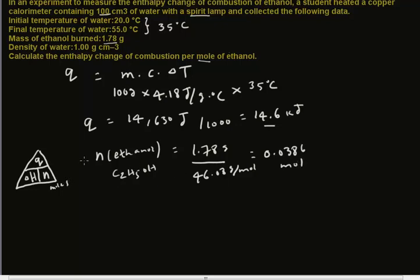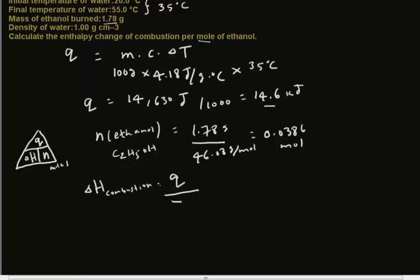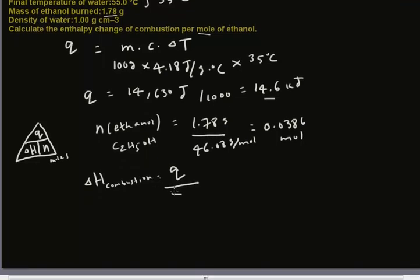So we have the moles of alcohol. We have the heat energy Q. Now we need to calculate the enthalpy change of combustion for one mole, delta H combustion. That's for one mole. So that's heat energy Q divided by the number of moles. So let me plug that in. So that would be 14.6 kilojoules divided by 0.0386 mole. So that would be about 378 kilojoule per mole.